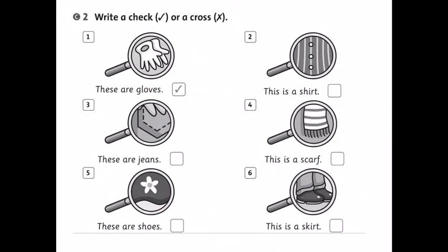Với những ví dụ tiếp theo, các con hãy nhìn hình và nhìn dòng chữ người ta cho thật cẩn thận. Sau đó đánh dấu tick hoặc là đánh dấu chéo vào bài cho cô. Được chưa nè?